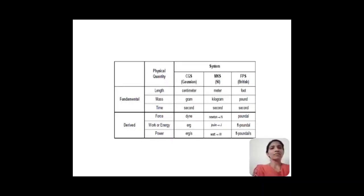Similarly, for mass, CGS unit is gram, MKS unit is kg or kilogram, FPS is pound. If we talk about the time, then in CGS it is second, in MKS it is second, and in FPS also it is second.